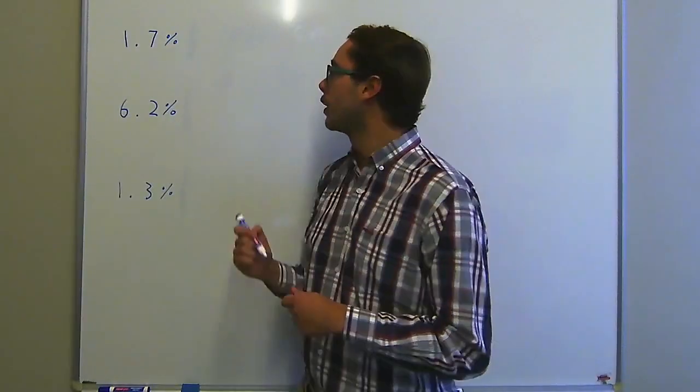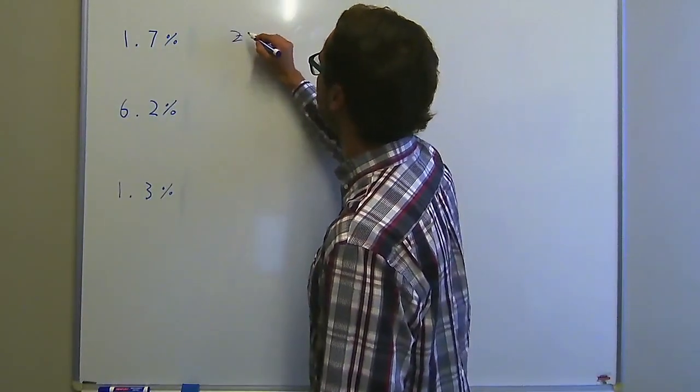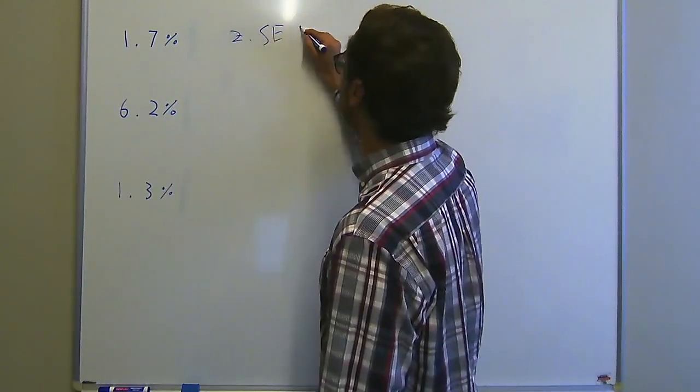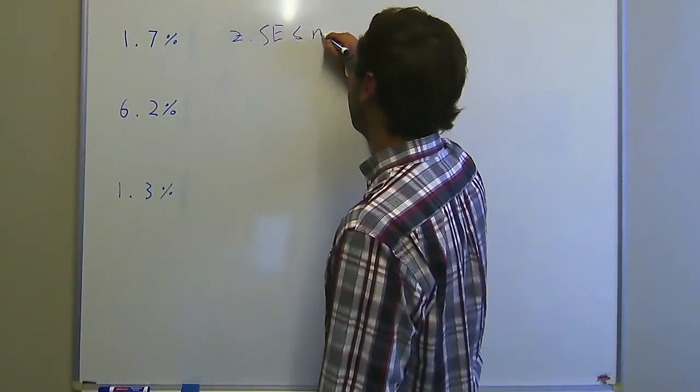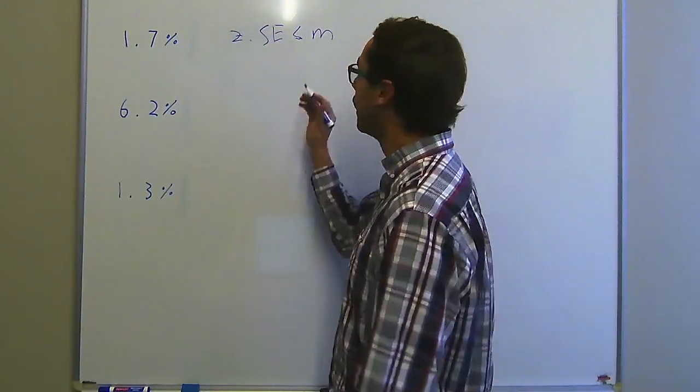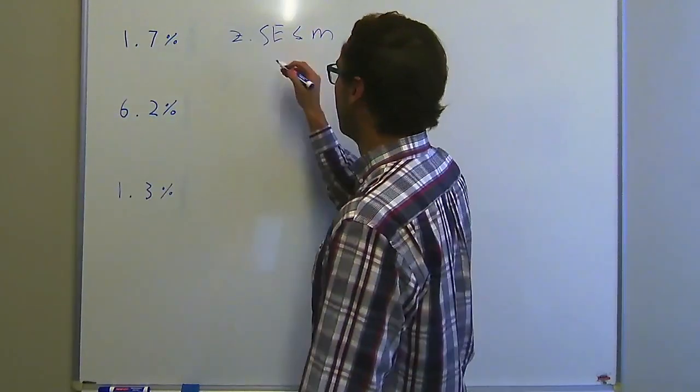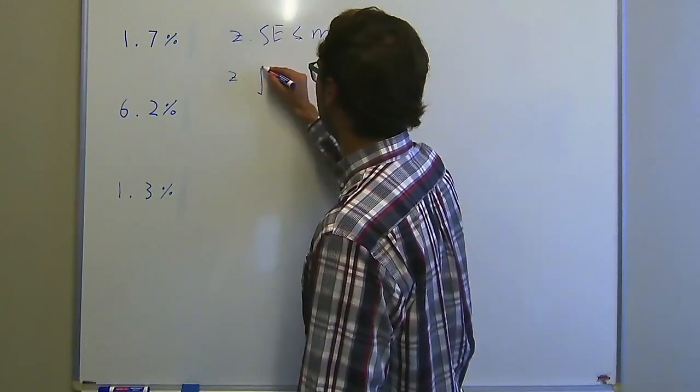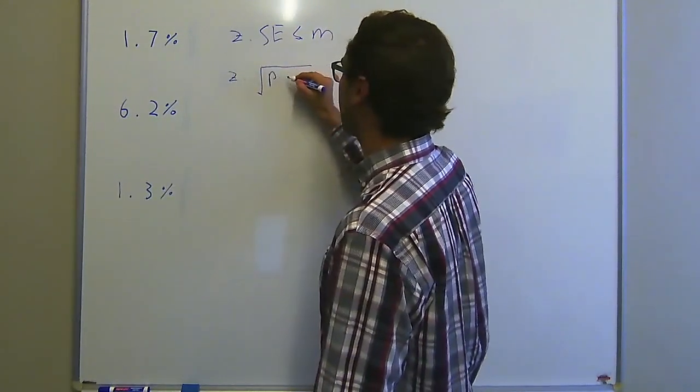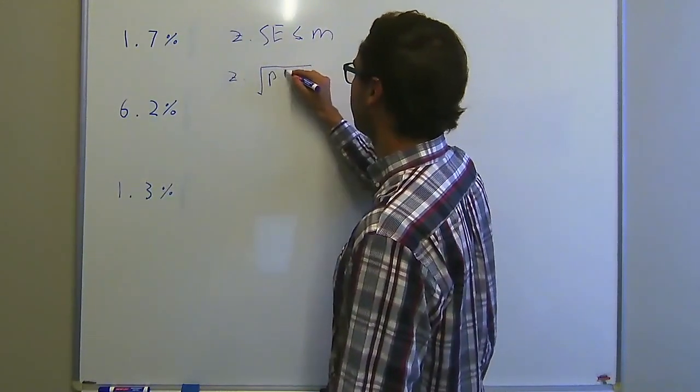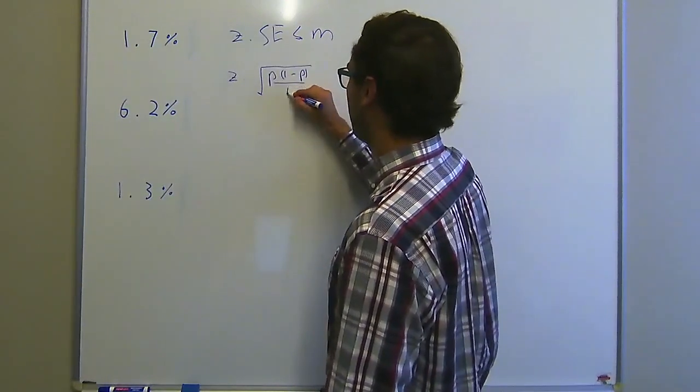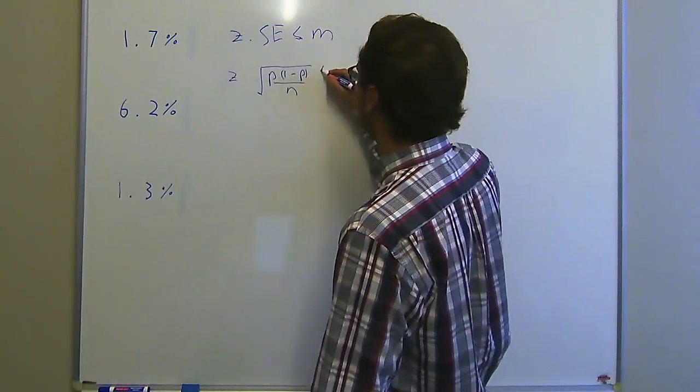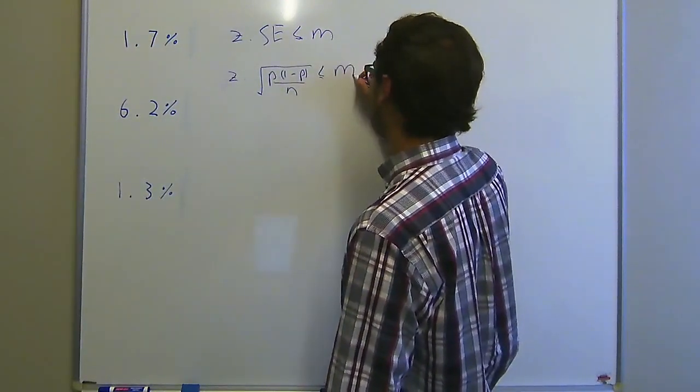To answer this question we're going to use the formula Z times the standard error must be less than or equal to M which is our margin of error. Because it's a single proportion we simplify the standard error to the square root of P times 1 minus P over N which is our sample size, and that is then less than or equal to M.